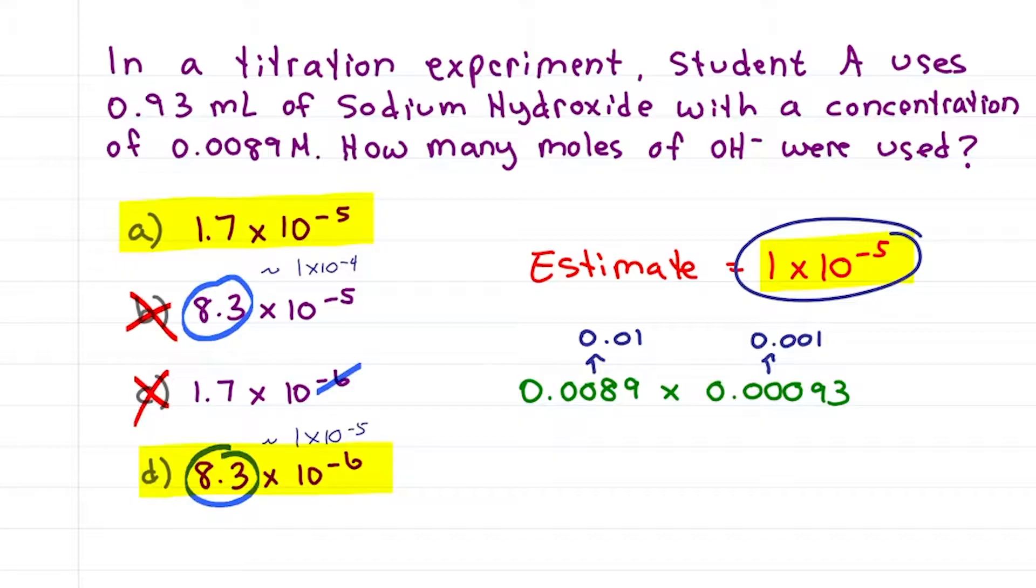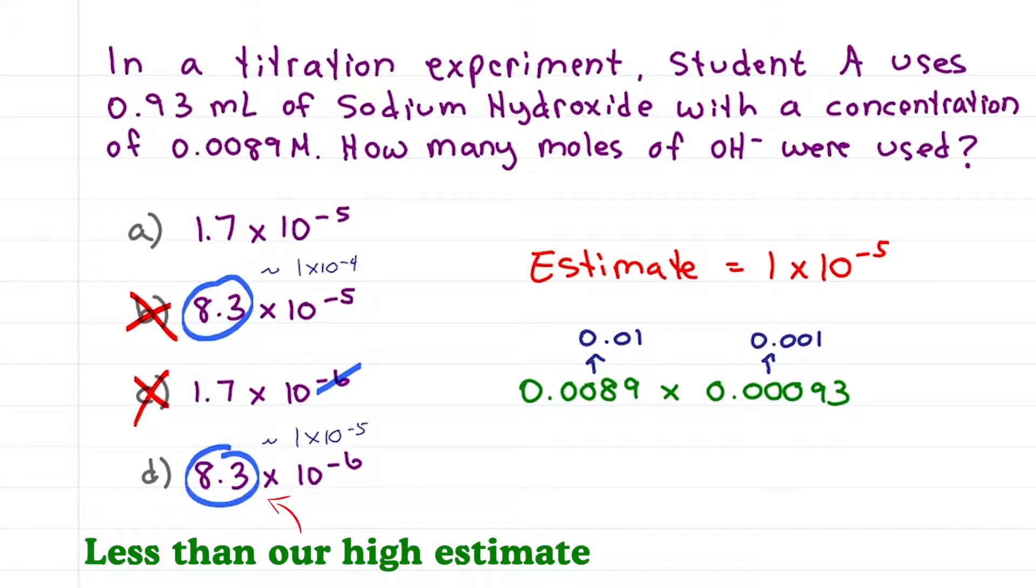And that means the actual answer is lower. 1.7 rounds down to give me one times ten to the minus five, which means it's too high for our answer. But 8.3 times ten to the minus six has to be rounded up to give us one times ten to the minus five. That means it's slightly lower than the estimate, making the answer D.